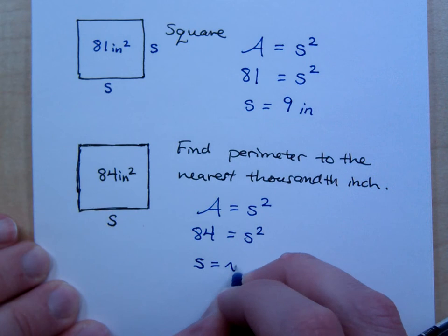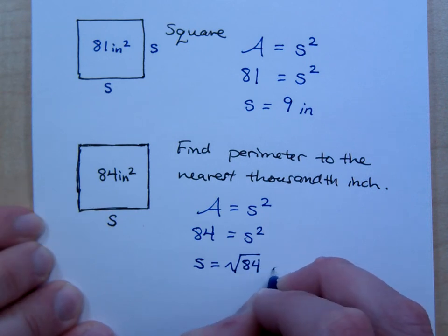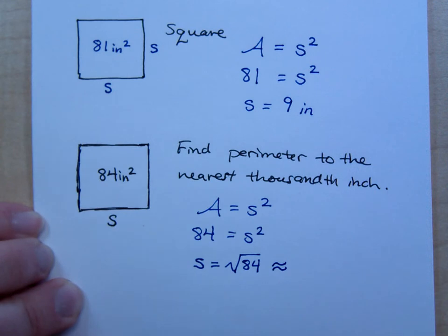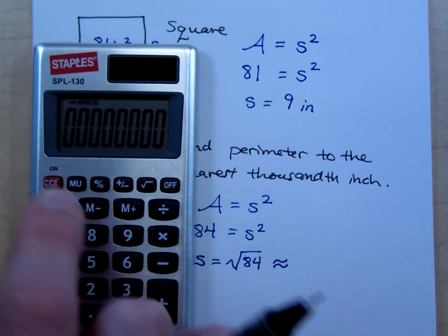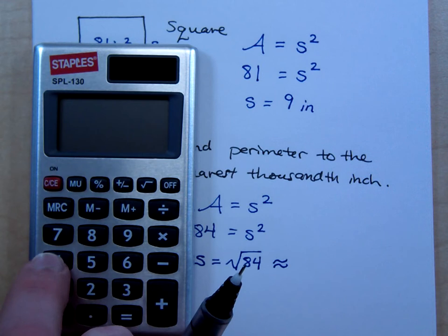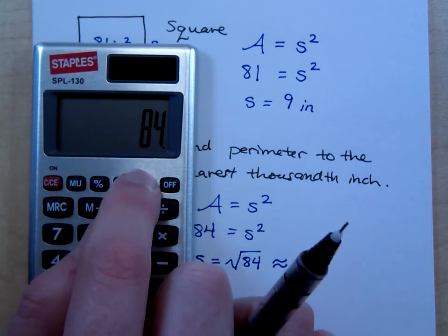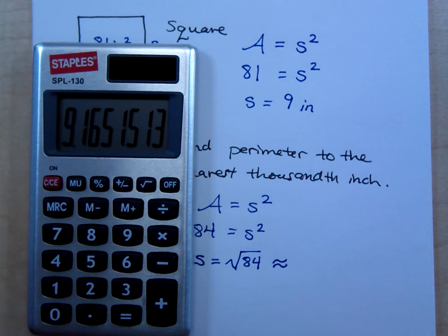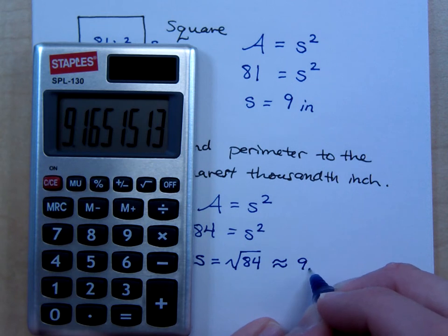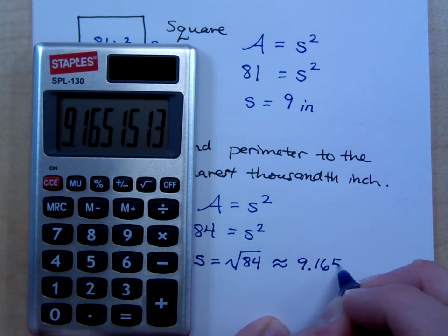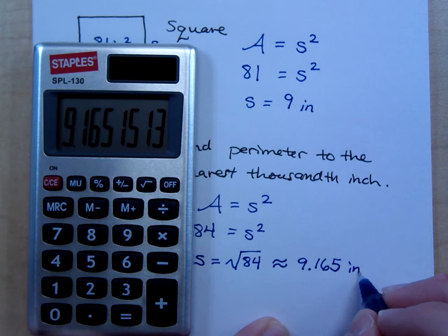So my S is equal to the square root of 84. But this guy is approximately, remember how we use that symbol? Approximately what? Go to your calculators, and I'll go to mine. So 84, I'm going to press the square root, so I get this. So my S is about what? This is about 9.165 inches, right? Do you agree with that?